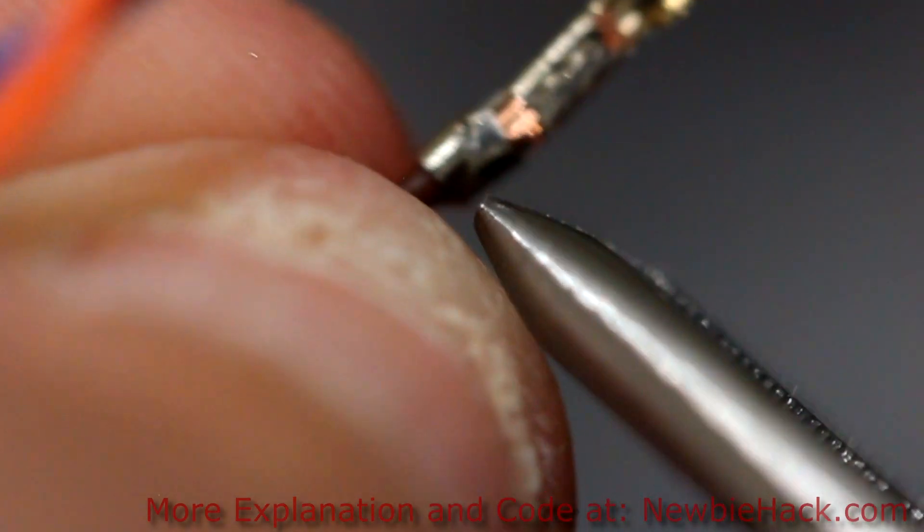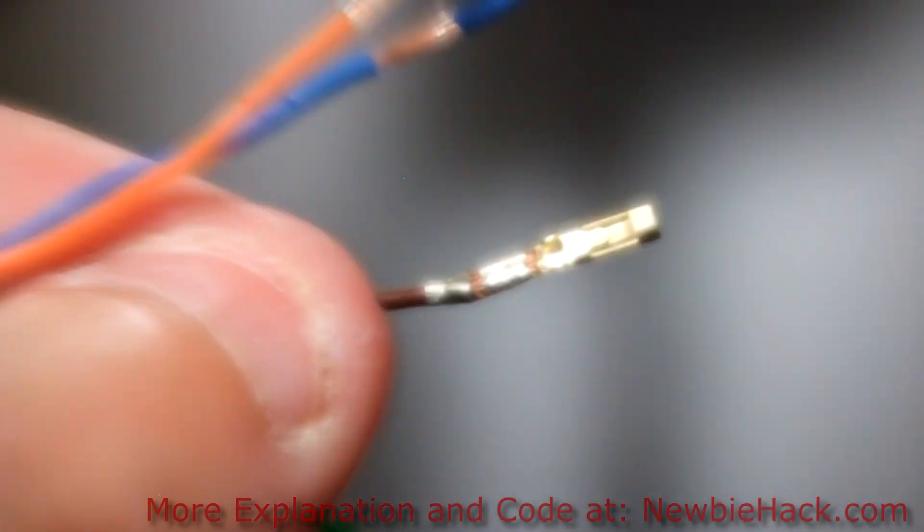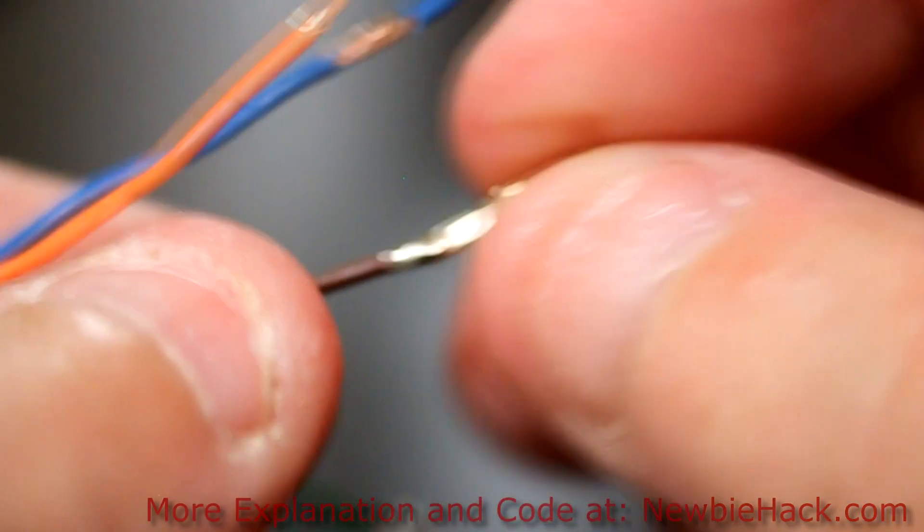I'm just going 90 degrees and crimping. And you can see how it's folding in on itself. Okay, that should be good. That should be pretty tough and it's not going to come out.